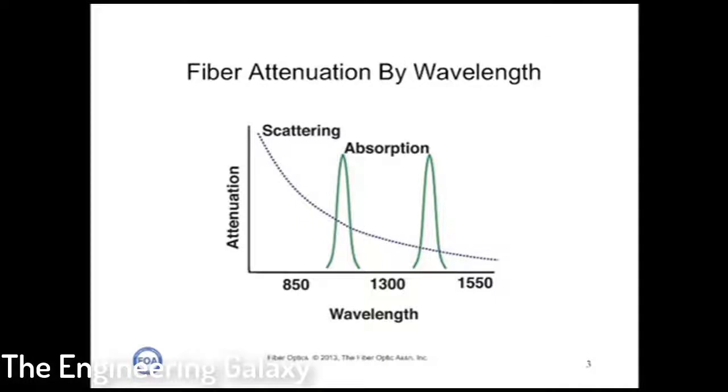There are two sources of attenuation in optical fiber, scattering and absorption. Absorption occurs at particular wavelengths, typically caused by residual water vapor in the fiber. Scattering, however, occurs when the light hits various molecules in the glass and bounces around. Scattering is highly dependent on the wavelength of the light.